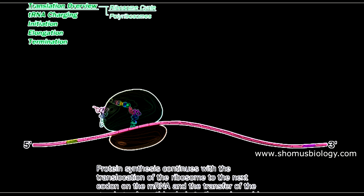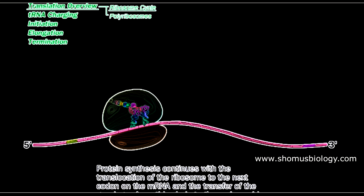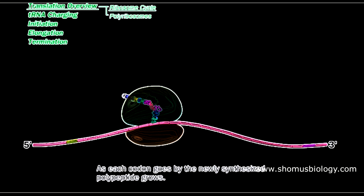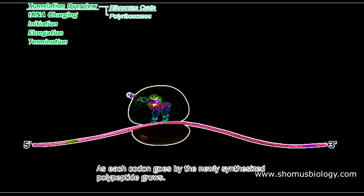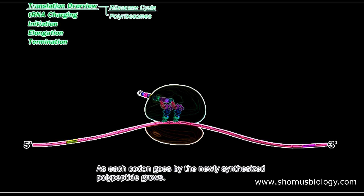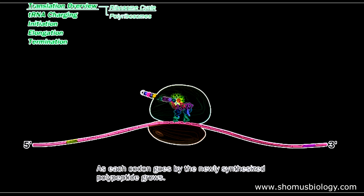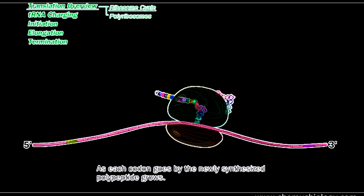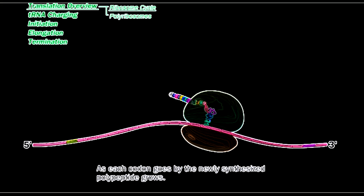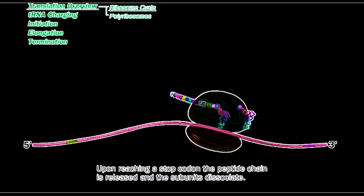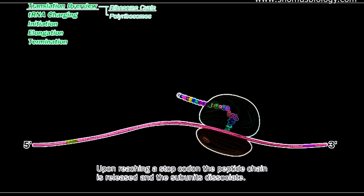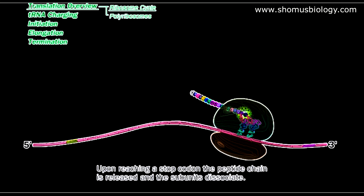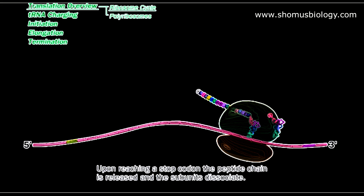As new amino acids are brought by tRNA, the existing polypeptide chain is transferred from the tRNA of the P site to the tRNA of the A site, and the ribosome slides along in the 5 prime to 3 prime direction. Polypeptide chain formation continues, catalyzed by the large ribosomal subunit — specifically the 50S subunit, particularly the 23S rRNA present in the 50S subunit.